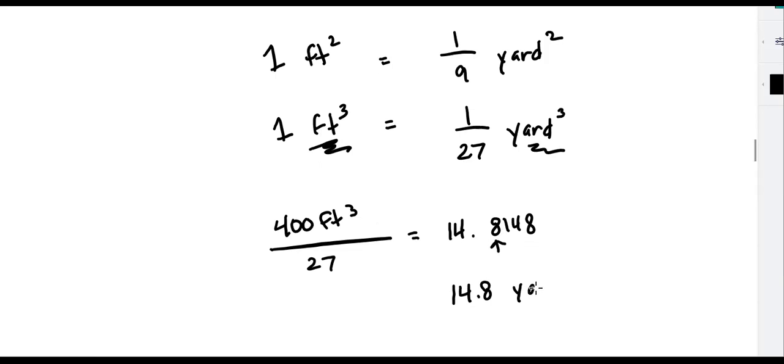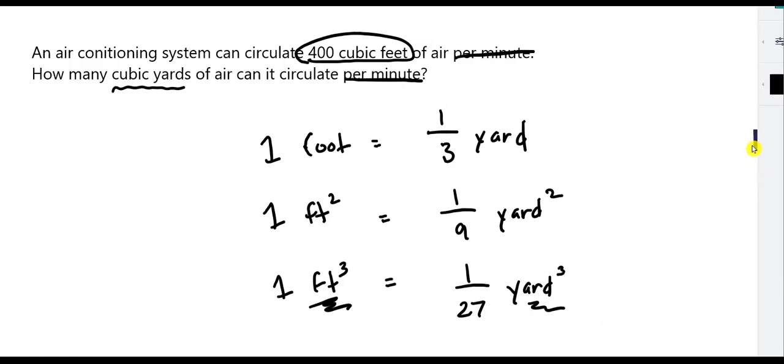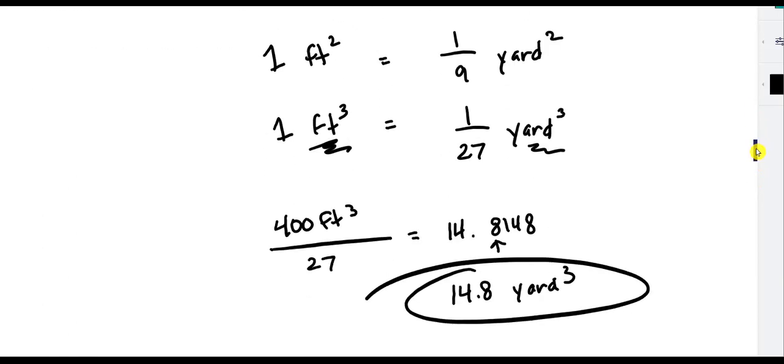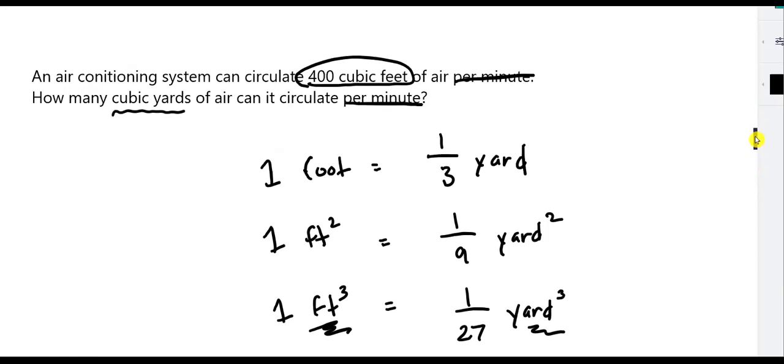So 14.8 cubic yards. To answer the question, the air conditioning system can circulate 400 cubic feet of air per minute. That is the same as saying it can do 14.8 cubic yards per minute.